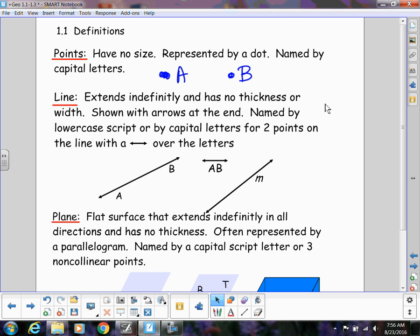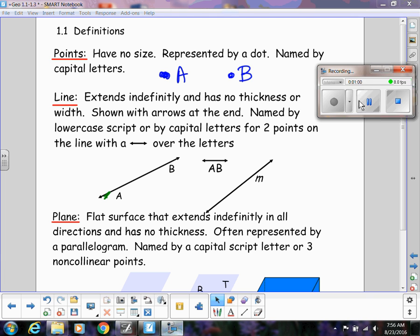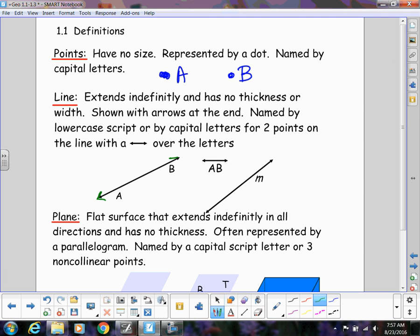And then we have lines. Lines extend indefinitely, so they go forever in both directions. They have no thickness or width. And the way we represent them with notation is we are going to make sure you draw arrows at the end. So make sure you're careful with that. If you don't draw arrows, it'll look like a segment. And then the way we name them is with either a lowercase script letter, so you see how this line is depicted by the lowercase m, or by two capital letters, and those capital letters are actually points that are on the line. So if I have point A and B on that line, I would name this AB. And notice when I name the line AB that I have a line with arrows over the top of it. So pay attention to that as well when you're labeling things.